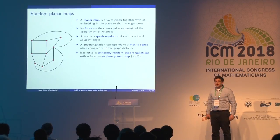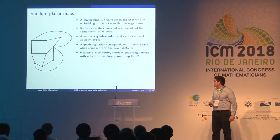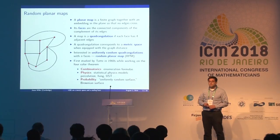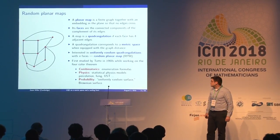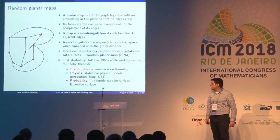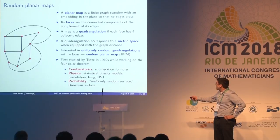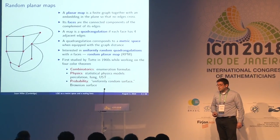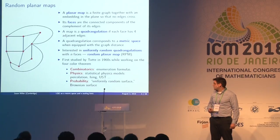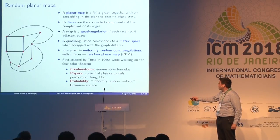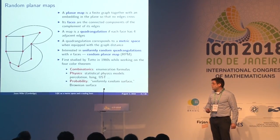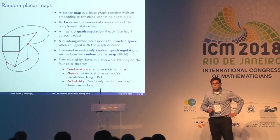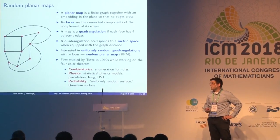When you fix the number of faces — say n faces — there are only finitely many quadrangulations, so you can pick one uniformly at random. This is a random planar map. These objects have a huge history going back to Tutte in the 1960s, when he was trying to prove the four color theorem. People have looked at planar maps from combinatorics, physics, and probability perspectives.